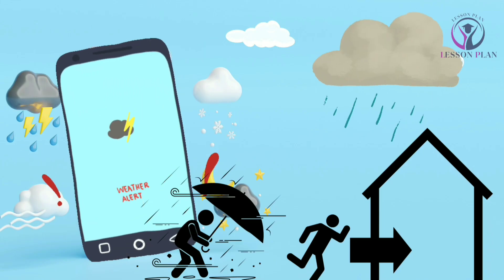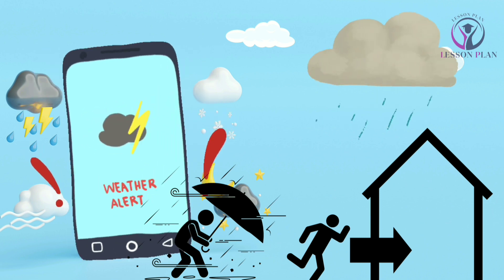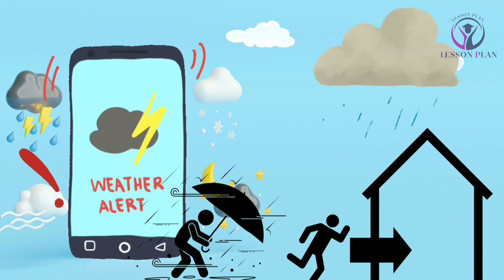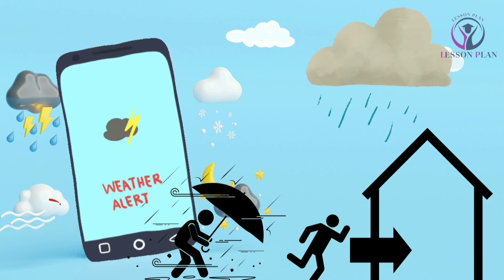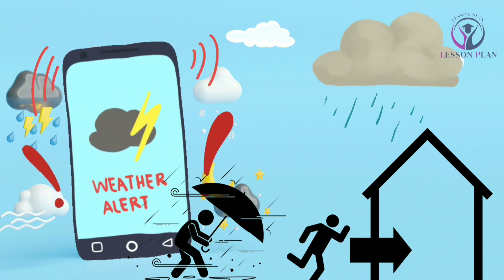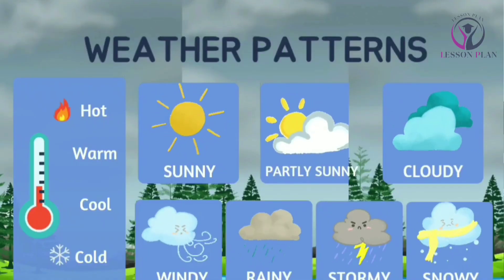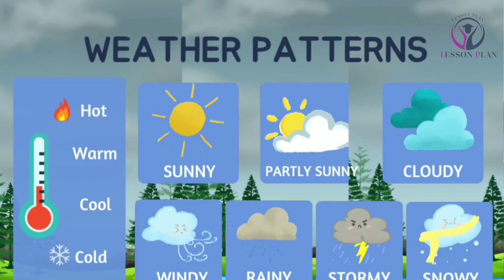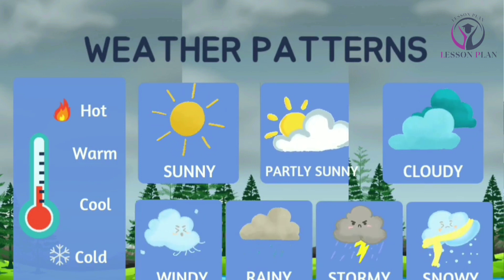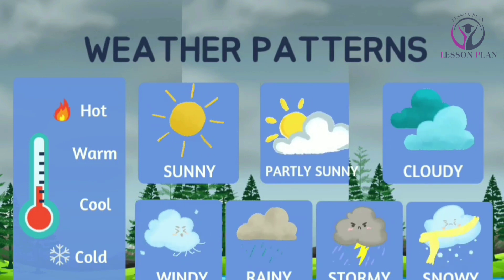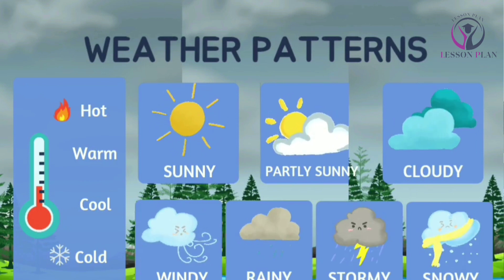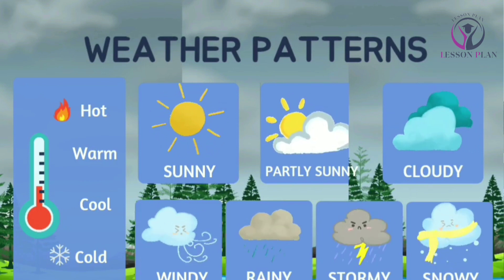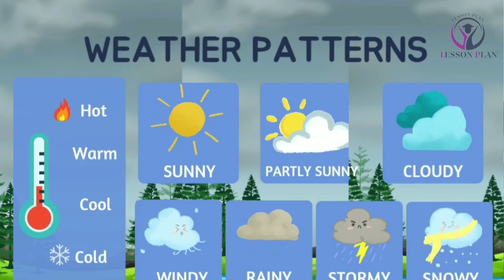So if you ever find yourself in the middle of a thunderstorm, it's important to take shelter and stay safe. And as always, keep learning about weather and the world around you. That's a quick overview of weather patterns and how they are formed. Understanding weather is important for staying safe and prepared, so keep learning about science and the world around you.